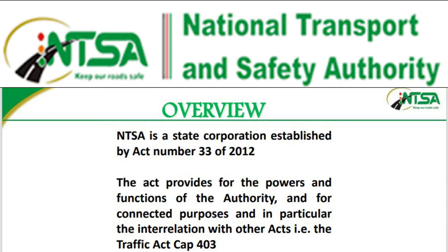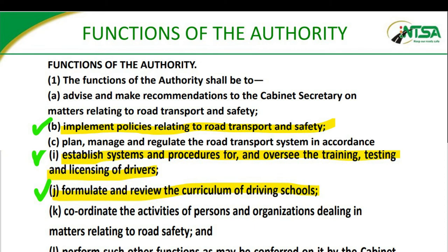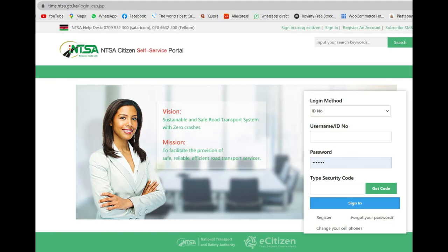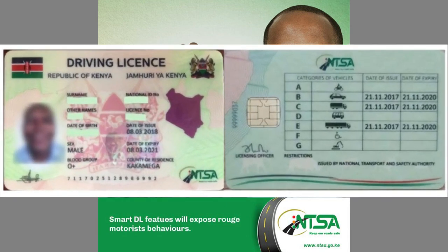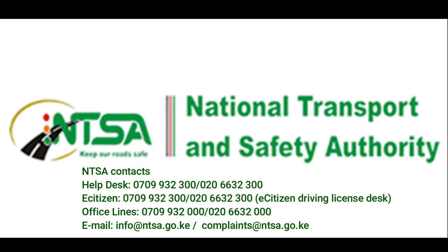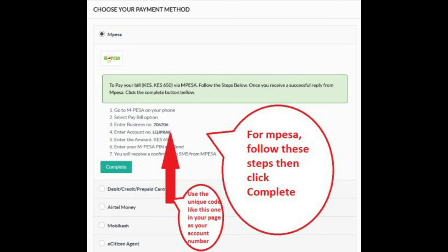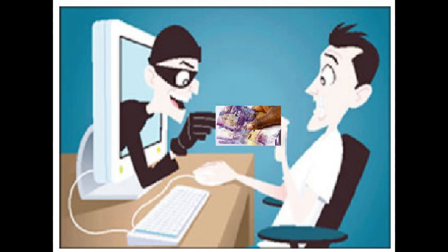The National Transport and Safety Authority, NTSA, is a government body that regulates driver licensing and driving schools. It was established through an Act of Parliament in 2012, with functions including establishing systems for the training, testing, and licensing of drivers, and formulating the curriculum for driving schools. Since then, NTSA has introduced new driving curriculum and license classes, fully automated records management through computerization, and introduced digital driving licenses in April 2018 in Nairobi. NTSA is located in Upper Hill and in most major towns in Kenya. It has also implemented online payment of all services through mobile money like M-Pesa, which has drastically reduced corrupt practices in obtaining these services.